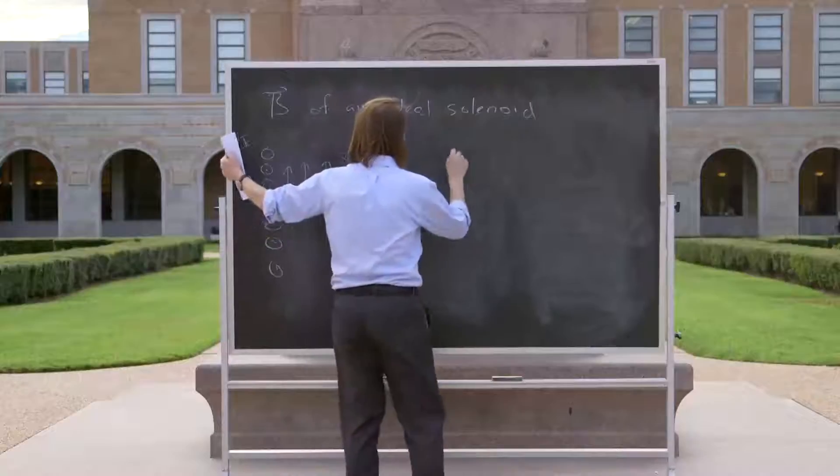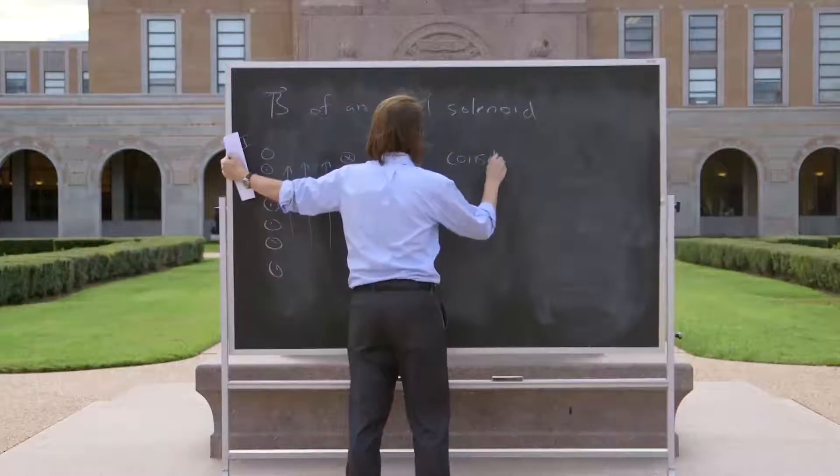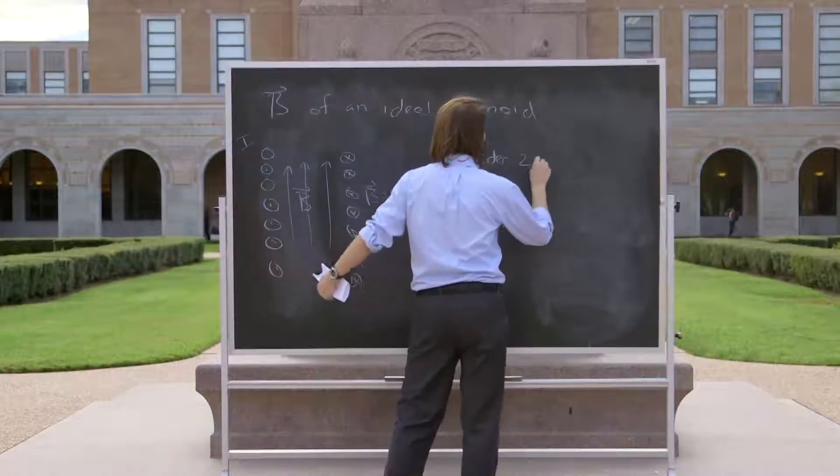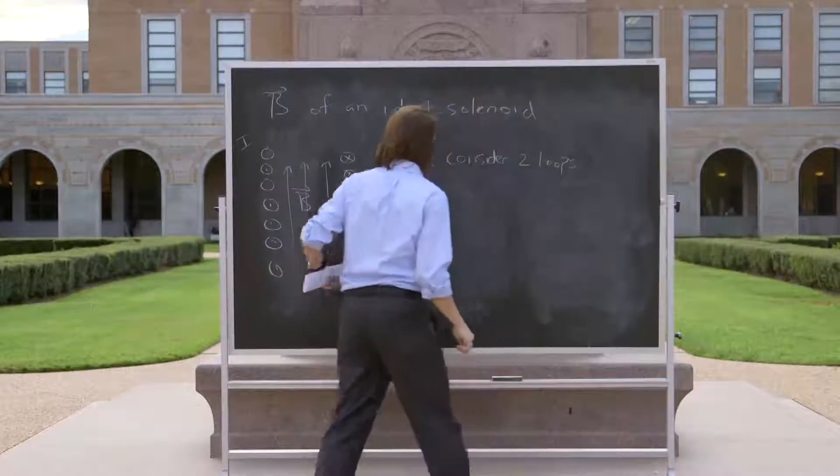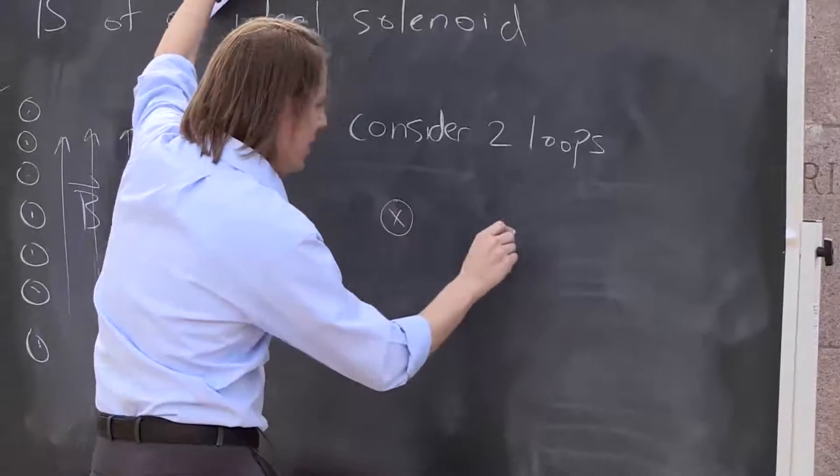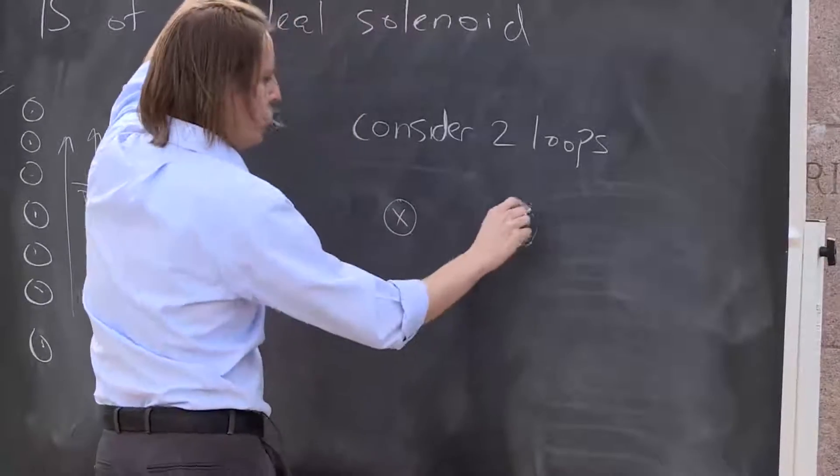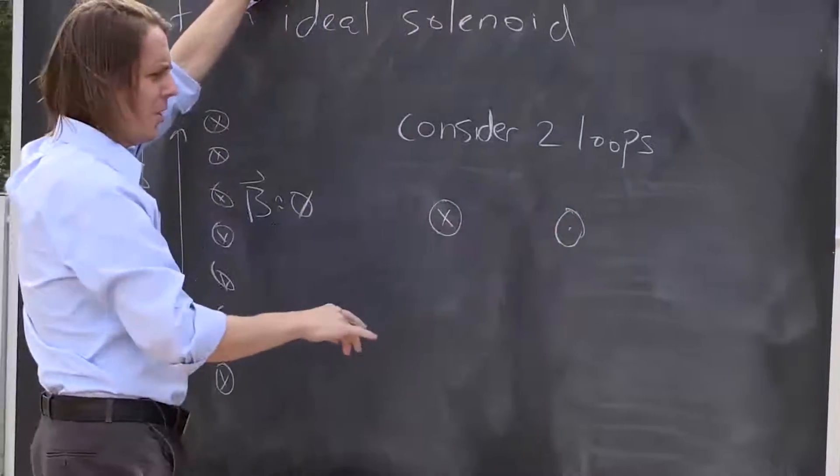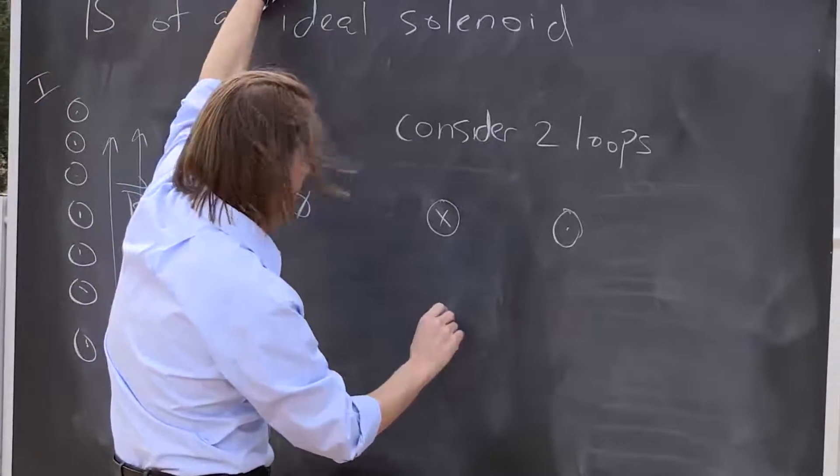So first, let's consider two loops. So one loop on the top here. There's a loop in cross section - I'm not going to draw the wires because it will make a mess - and another loop down here.